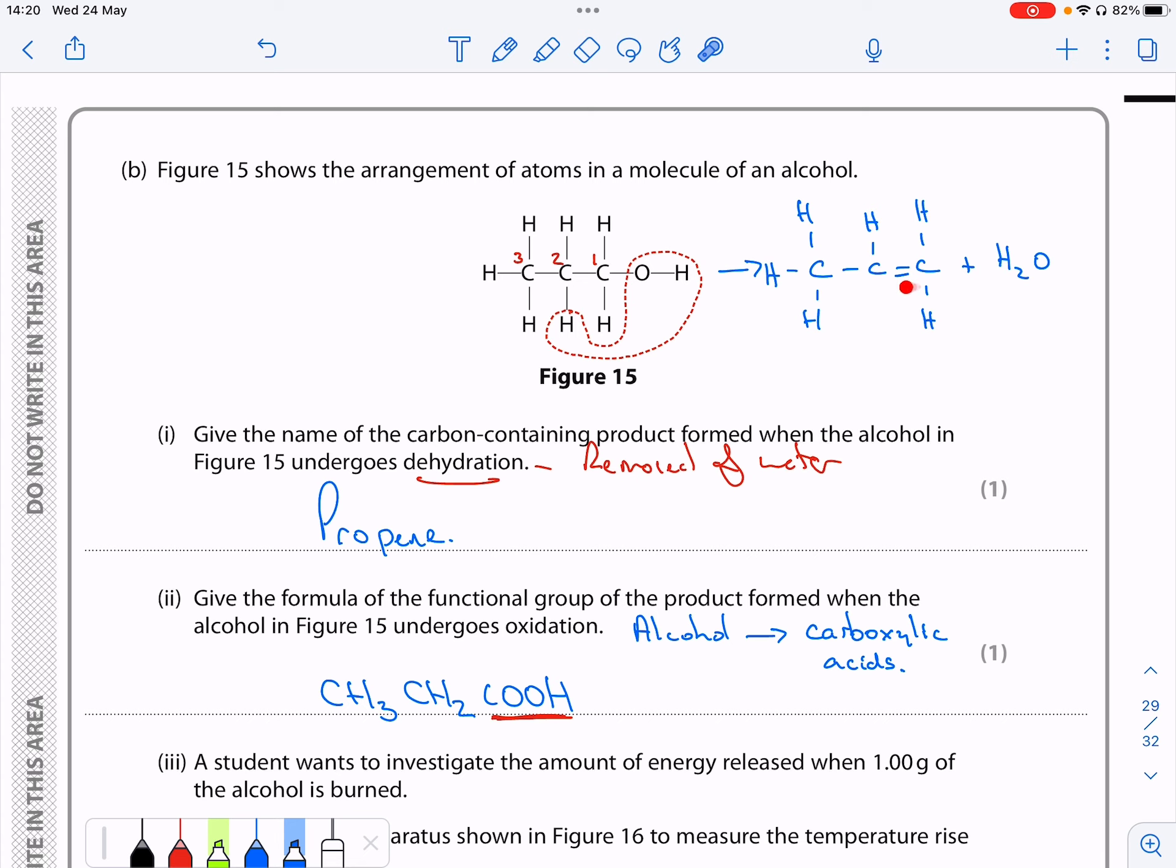We get left with this chemical with the water separate, and this – you hopefully spot – is one, two, three carbons. So it's prop, and it's an alkene, so it's propene is the chemical formed.